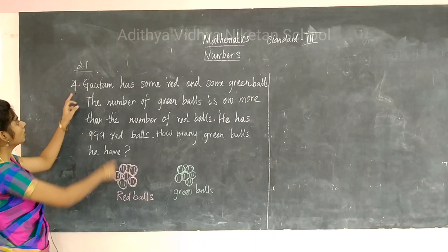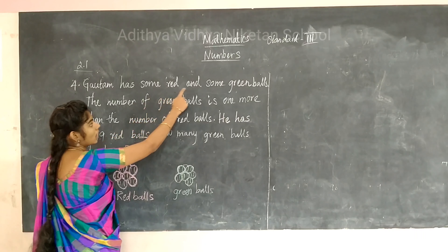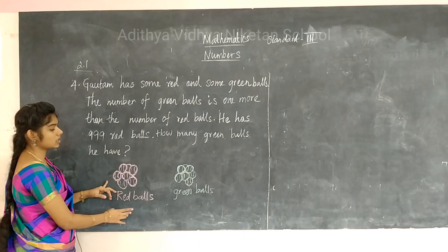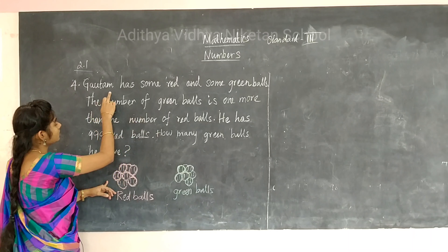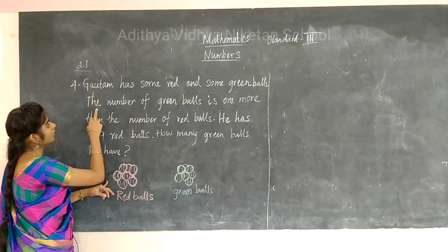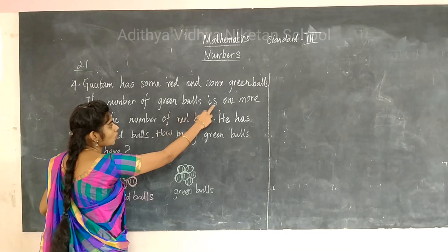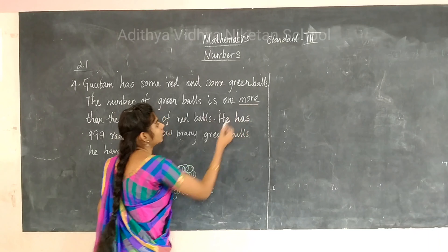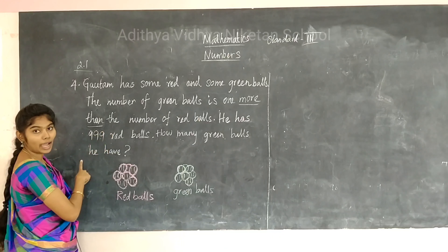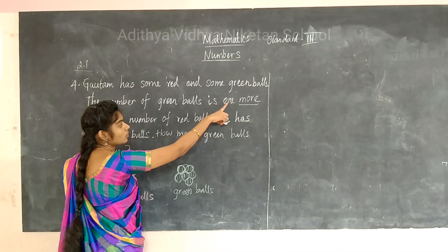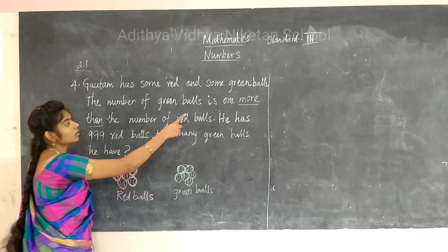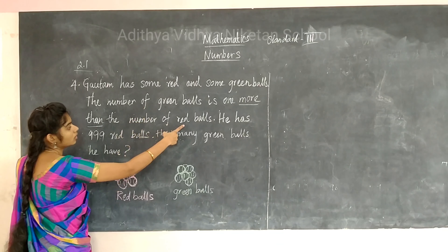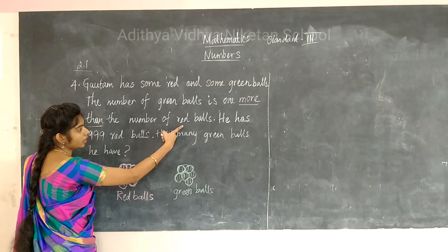Now let's look at the 4th sum. Gautam has some red and some green balls. Imagine he has two types of balls — red and green. The number of green balls is one more than the number of red balls. 'One more than' means we need to add 1 to the red balls to get the green balls.